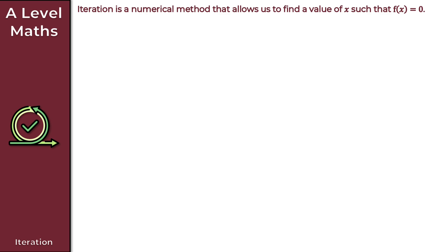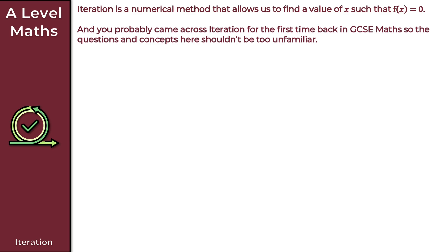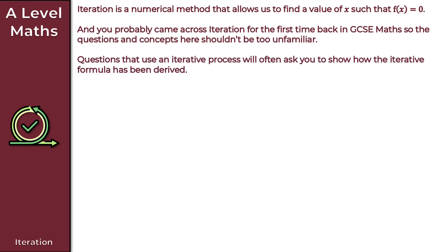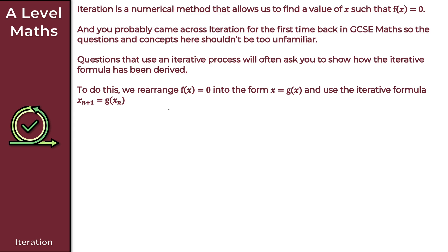In this video, we're going to take a look at iteration. Iteration is a numerical method that allows us to find a value of x such that f of x is equal to zero. You probably came across iteration for the first time back in GCSE math, so the questions and concepts featured here shouldn't be too unfamiliar. Questions that use an iterative process will often ask you to show how the iterative formula has been derived. We rearrange f of x equals zero into the form x equals g of x, then use the iterative formula x_{n+1} = g(x_n).